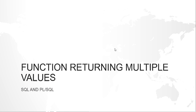Suppose for a given employee ID, I want the first name, last name and the department name in which the employee works. How to achieve such a thing where more than one data is required? As we know, we can have only one return statement in a function — only one return statement would be executed and the calling of the function will go to the host environment.